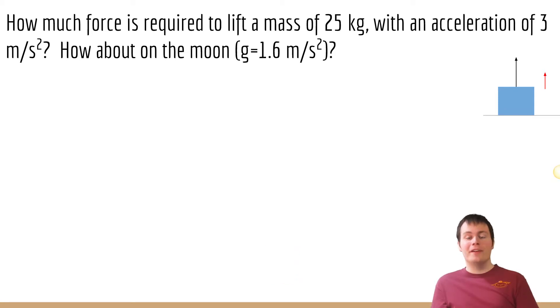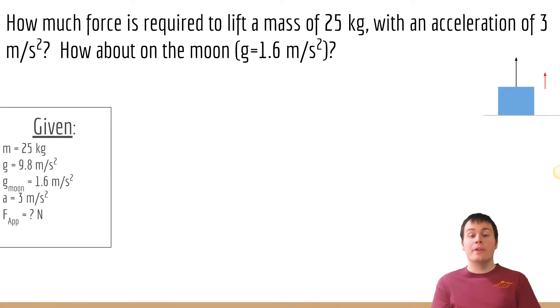The first thing I did to solve this was to write out everything I knew about this problem. We know the mass, we know how fast it's accelerating, and we know where it's accelerating - Moon or Earth - so we know what the gravitational constant is in each of those two.